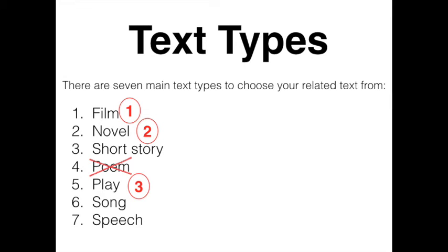What I would recommend you do with your list is number the text types one, two, and three — one being the text type that you would most like to use as a related text. I've chosen film as my number one, with Into the Wild being a film, novel as number two, and play as number three. Remember that when you are choosing related texts for the other modules, continue varying the text types. Make your related texts all different types, hence the one, two, three scoring system.